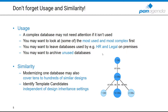Before we jump further into code analysis, don't forget usage and similarity, where Application Insights also provides great insights. A very complex database may not need attention if it isn't used by anybody. You may also want to look at the most used and most complex applications first, combining usage with complexity insights. When moving to the cloud, you may want to leave databases on premises that are used by HR and legal, and archive unused databases. When it comes to similarity, modernizing one database may cover tens to hundreds of similar designs.